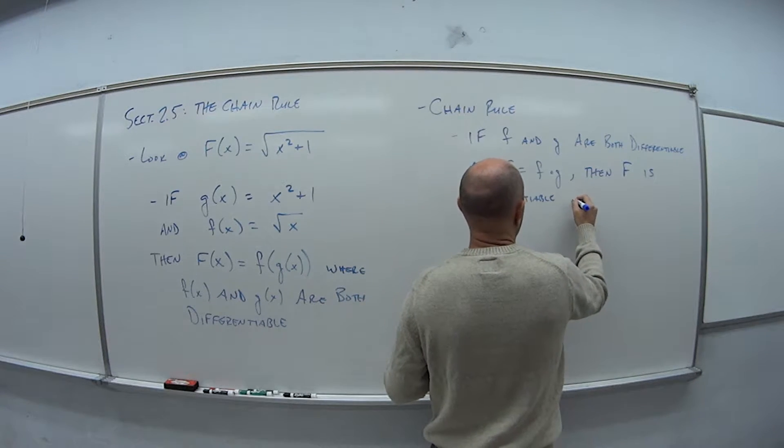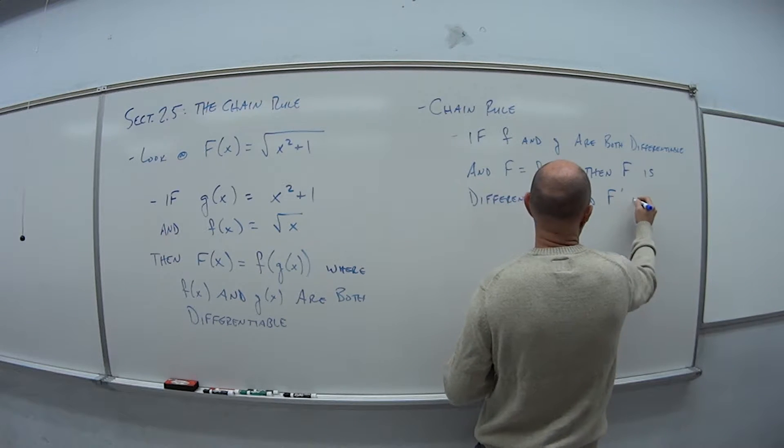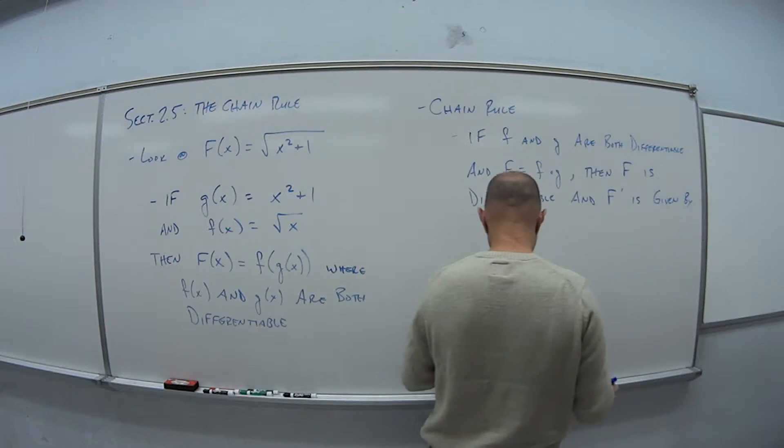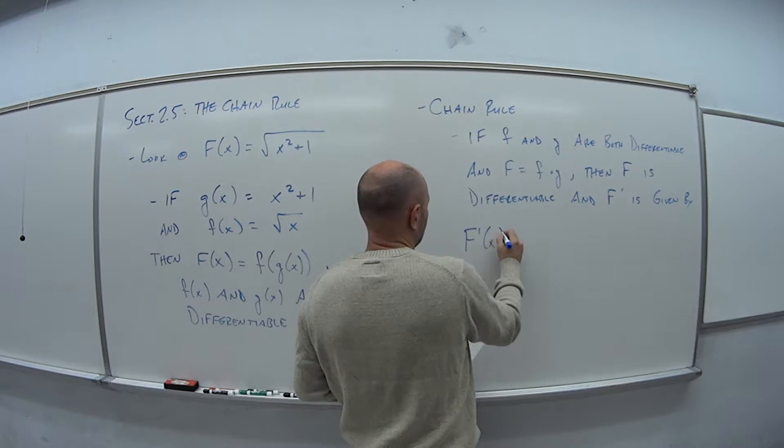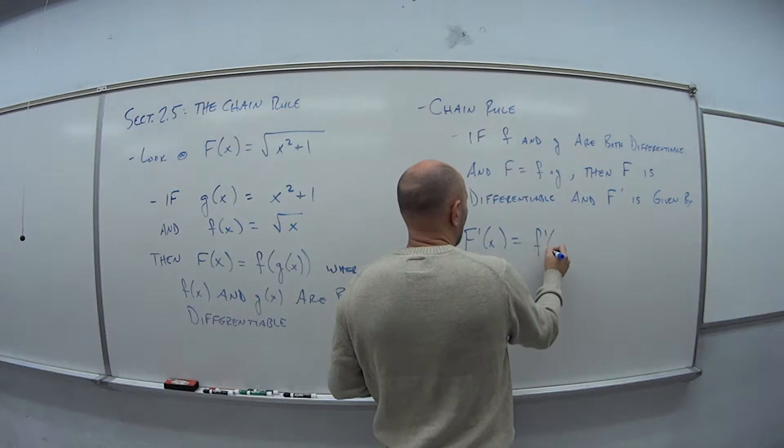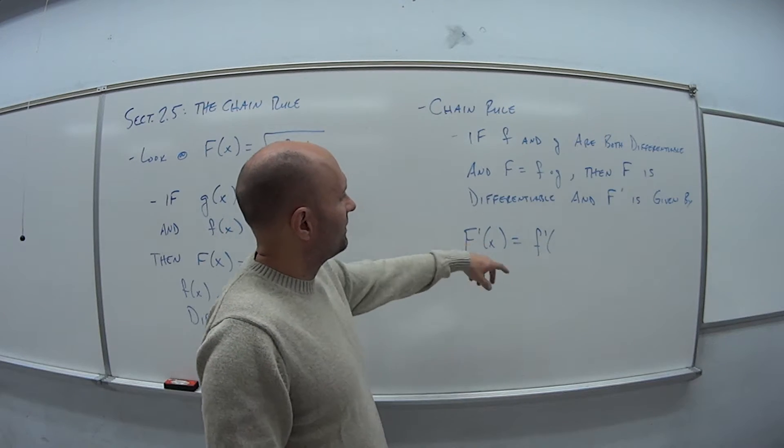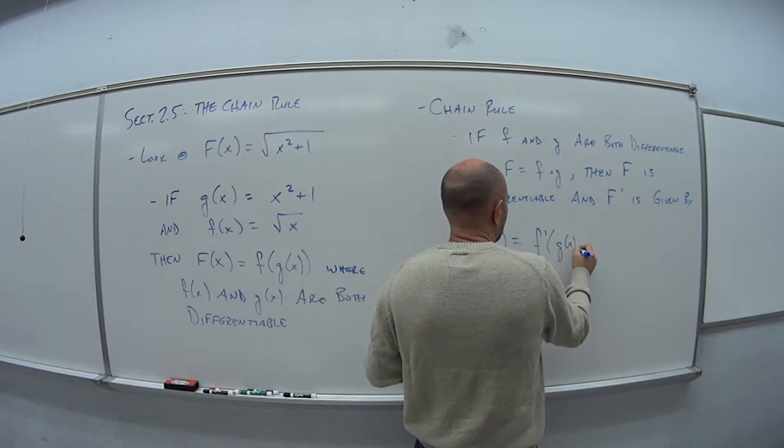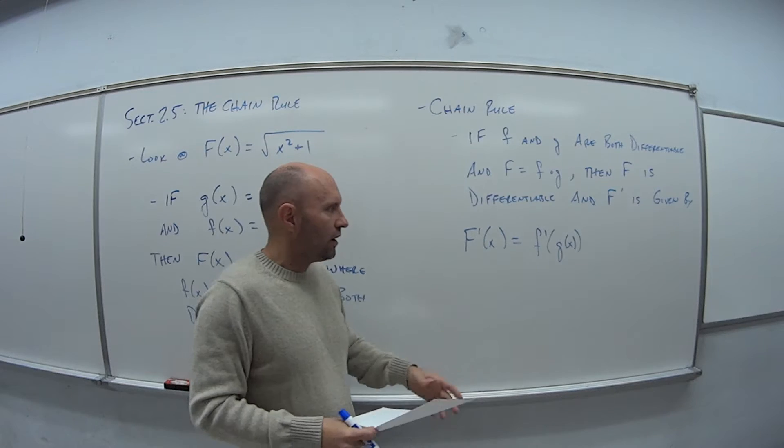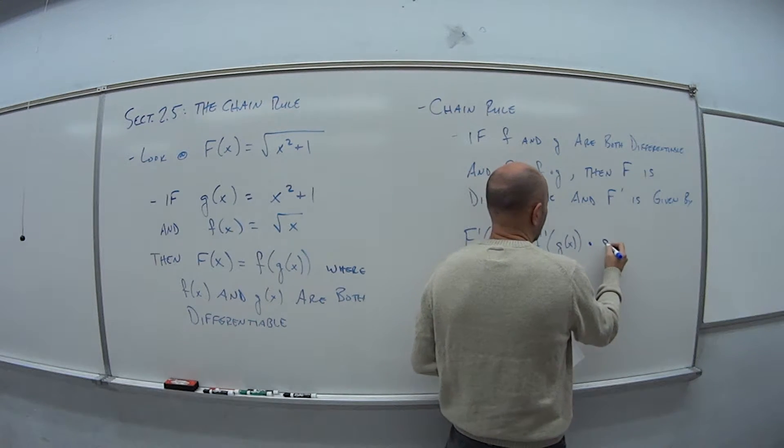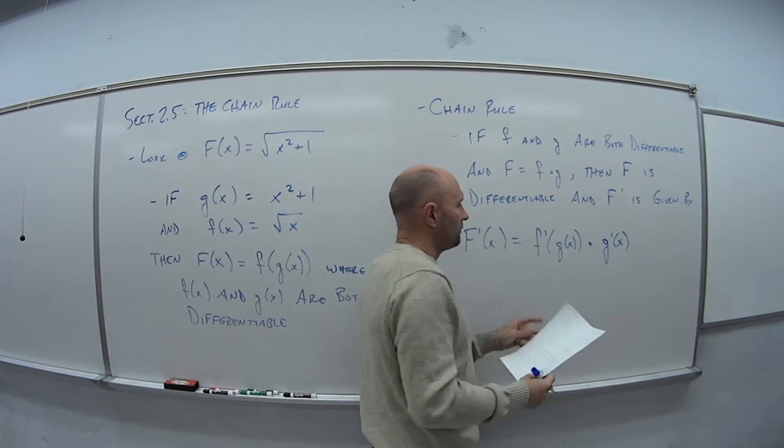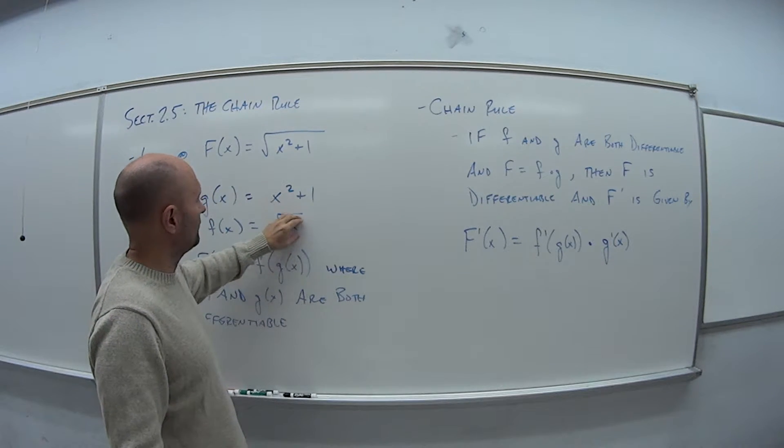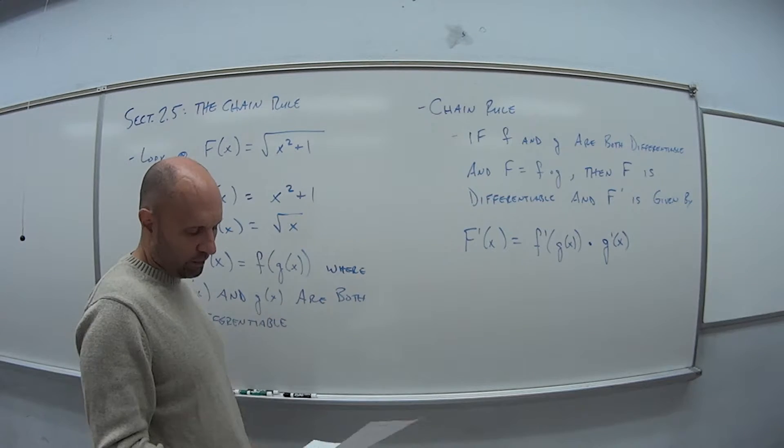And F prime is given by F prime of x equals - so we take the derivative of the f function and leave the g function inside of it still. But then we have to multiply this by the derivative of the function inside. So we would take the derivative of f, leave the g function inside, and multiply it by the derivative of the g function.